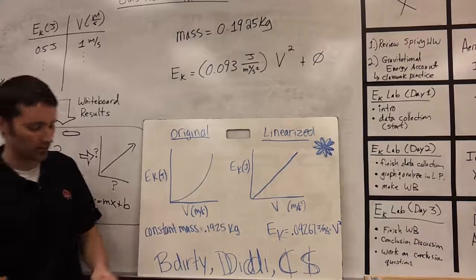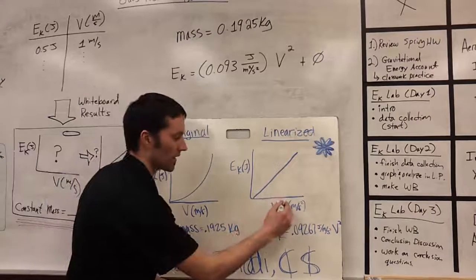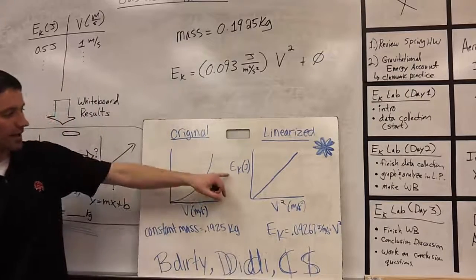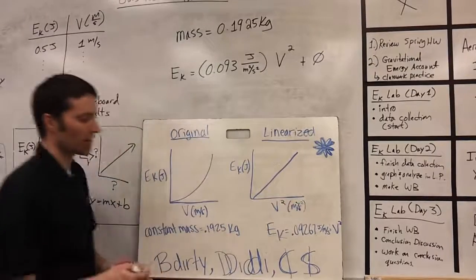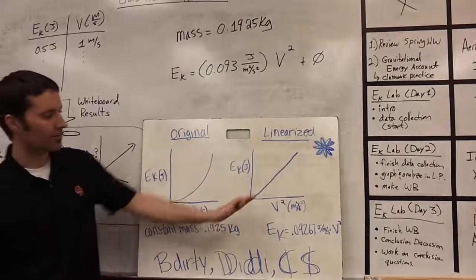In order to linearize that, we had to square the x variable. So we graph kinetic energy versus velocity squared with units of meters squared divided by seconds squared to get a straight line.